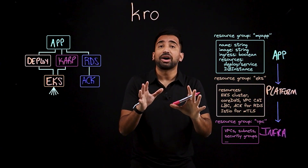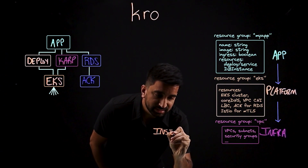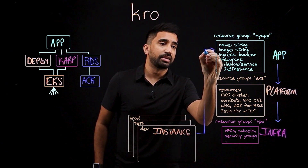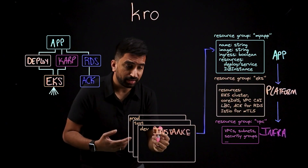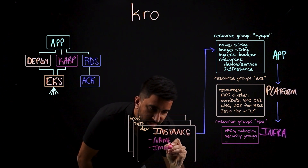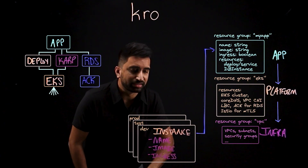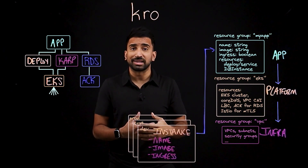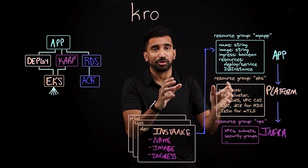You might be wondering: how do dev teams make use of this? Well, what they'll do is create what's called an instance. An instance will let them create a version of this application using a set of parameters that the platform team has exposed for them to use. So here, for example, maybe they can configure things like the name of the app, the configuration for the image, and whether they need an ingress configuration for external load balancing. What you might not see here is the ability to turn off mutual TLS or Istio, because that's an organizational requirement that the platform team doesn't want to be configurable.